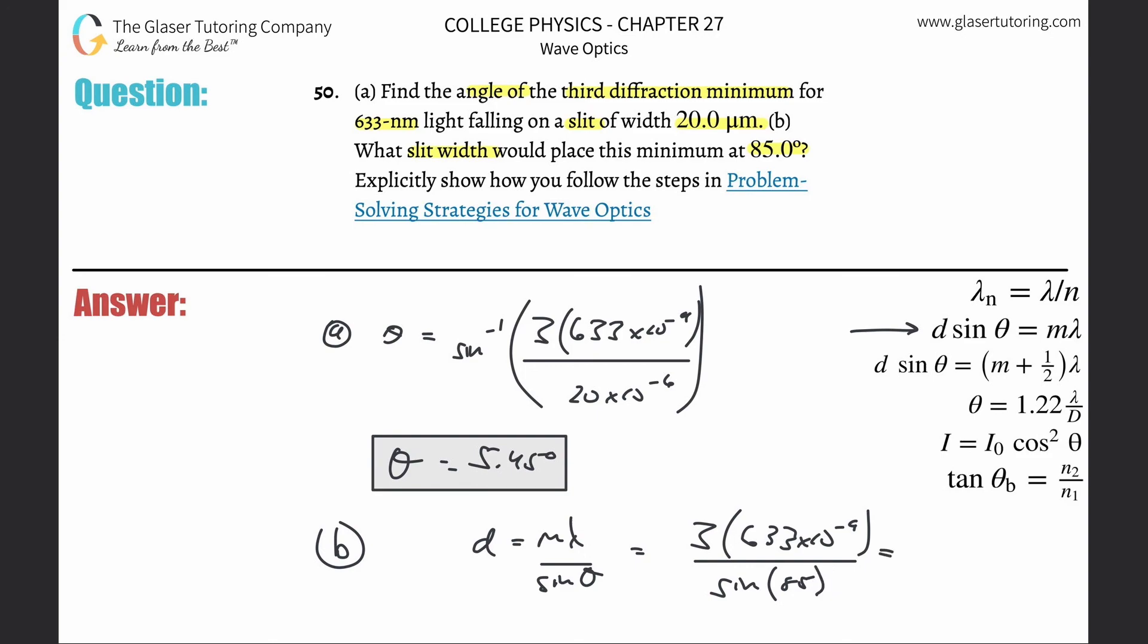And do the math. So three times 633 times 10 to the minus ninth divided by sine of 85. This works out to be about 1.91, 1.91 times 10 to the minus sixth. And that's in terms of meters. That would be like 1.91 micrometers if you had to convert it.